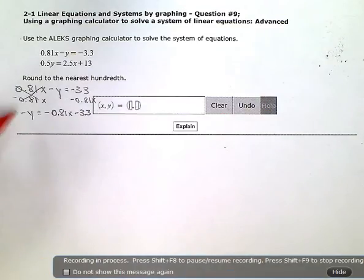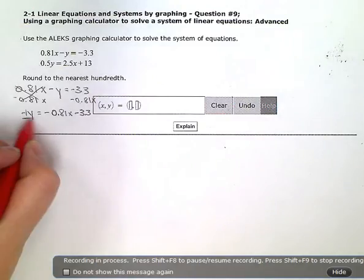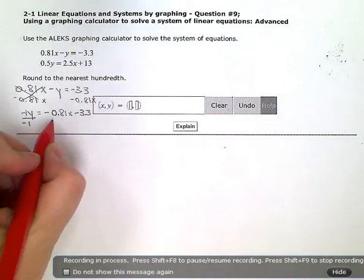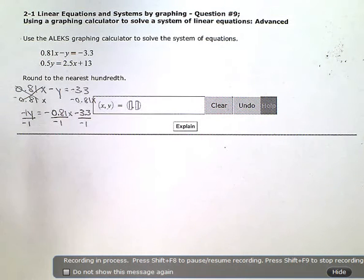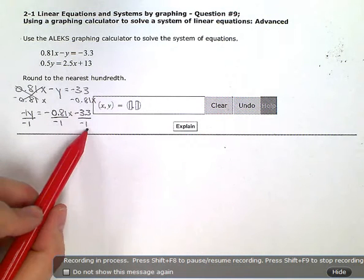And then there's a hidden coefficient of negative 1 on the Y right now, right there. So I'm going to divide off that coefficient and then balance my equation by doing the same thing to the other terms.